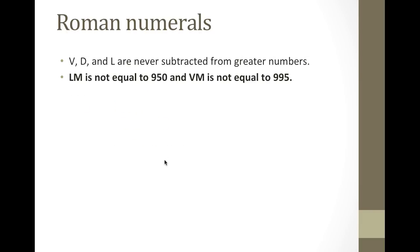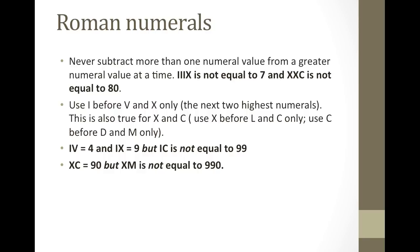V, d, and l are never subtracted from greater numbers. So lm is not equal to 950, and vm is not equal to 995. Although this may look simpler, we have to remember this rule: v, d, and l are never subtracted from greater numbers. Also, never subtract more than one numeral value from a greater numeral value at a time — so iiix is not equal to 7, and xxc is not equal to 80.